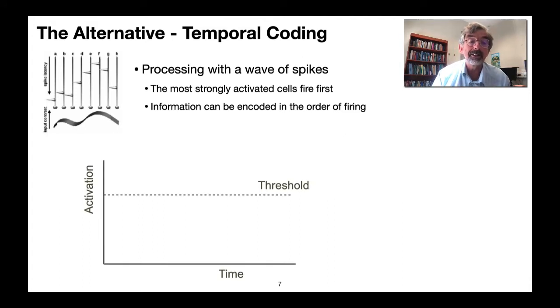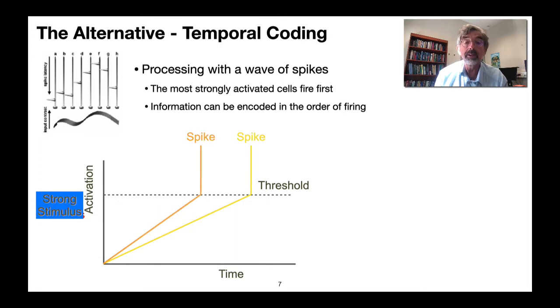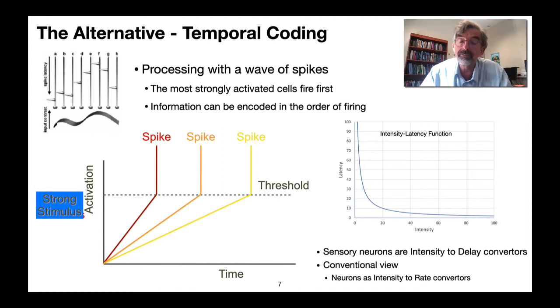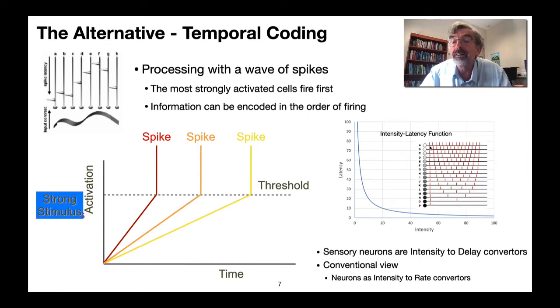If you've got a weak stimulus it takes a certain time to get the neuron to reach the threshold to spike. If you increase the intensity of stimulus it will fire with a shorter and shorter latency and you get this sort of intensity-latency function. As intensity increases the latency drops and so effectively neurons are intensity to delay converters, which is very different to the conventional view of neurons as intensity to rate converters. You don't need to look at all these other spikes here because you already know the intensity by looking at the latency of the first spike.